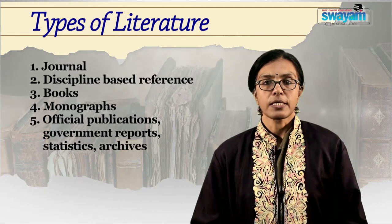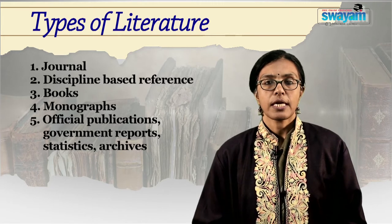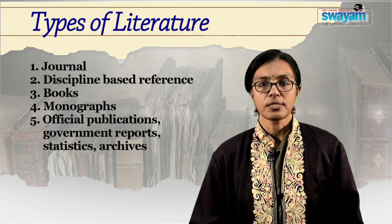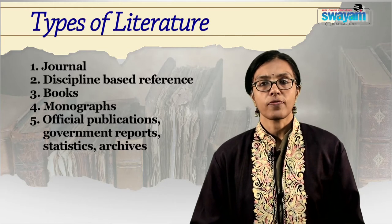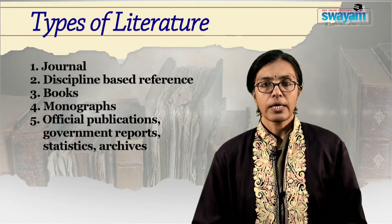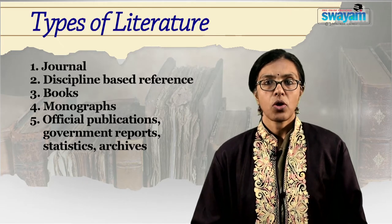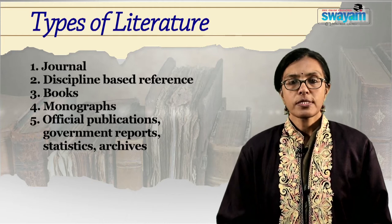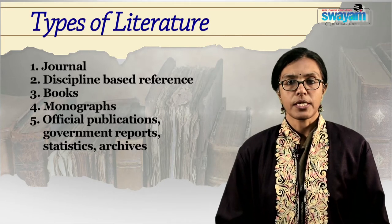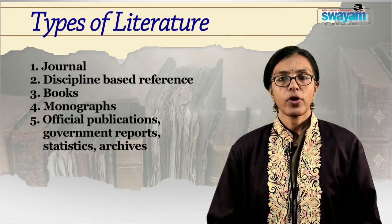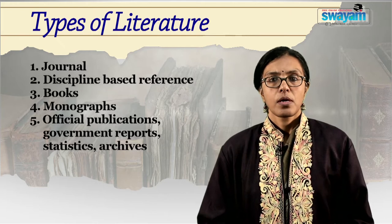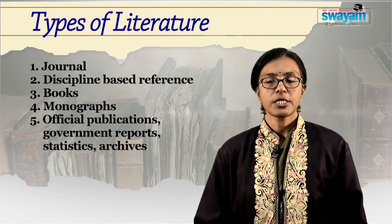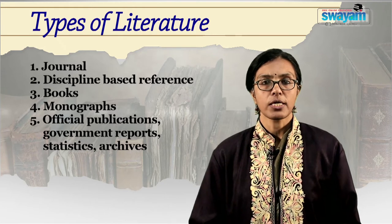Discipline-based reference material includes subject-specific dictionaries and encyclopedias which can provide the technical jargon, keywords, terminology, definitions, conventions, standards, theories and constructs of the discipline. Books include textbooks, anthologies, fiction, non-fiction — all kinds of books which deal with our topic can provide reference to our research question. A monograph is scholarly writing on a single specific subject, usually by a single author; monographs are useful for an in-depth understanding of a topic. Official publications such as government reports, statistics and archives contain information which can be used to base our arguments on authentic foundations.